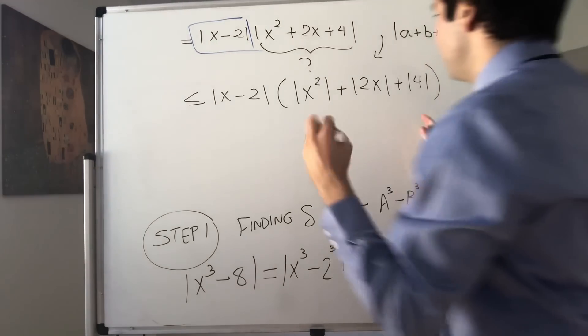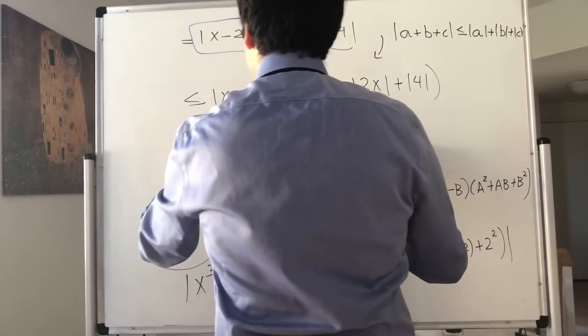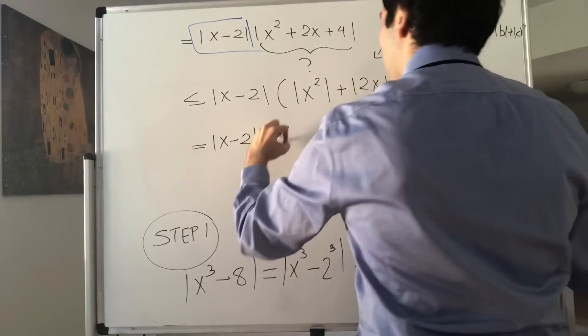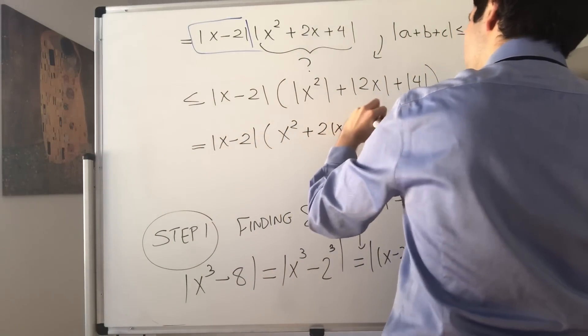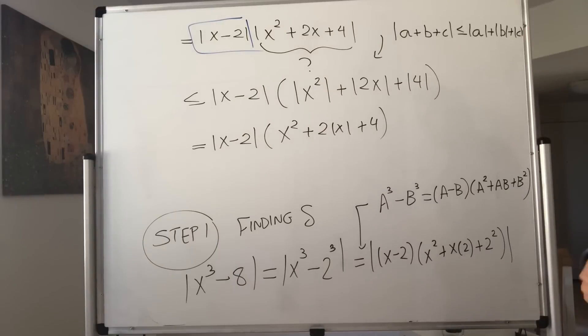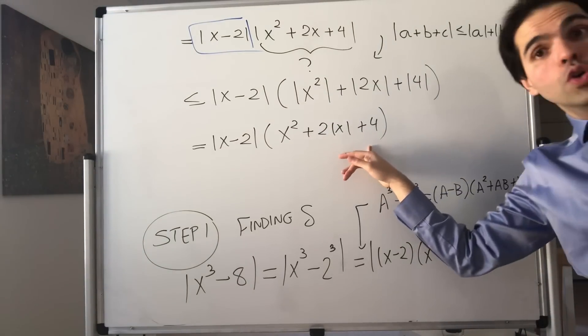This basically becomes x minus 2 times x squared is positive, and then 2 absolute value of x plus 4. Now here's the thing though, this can be huge.